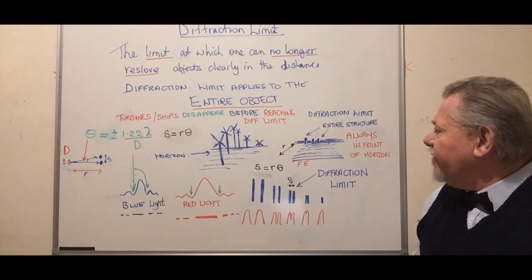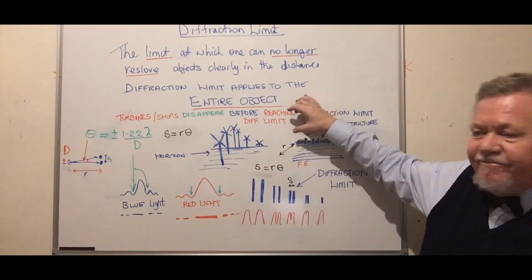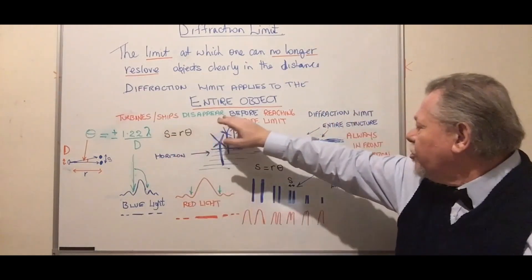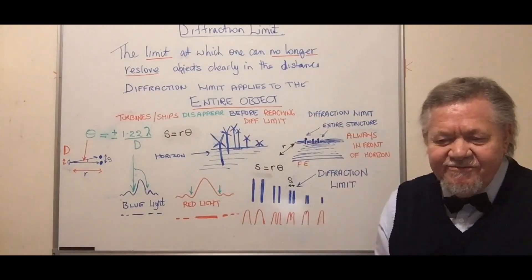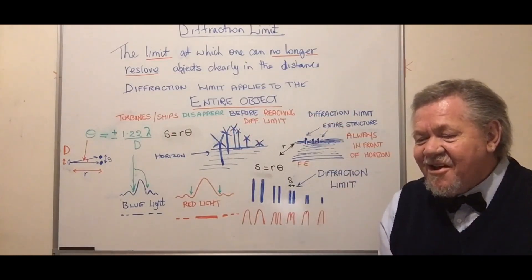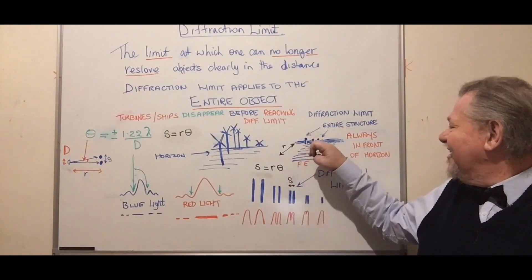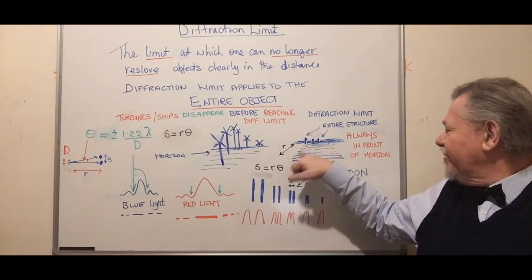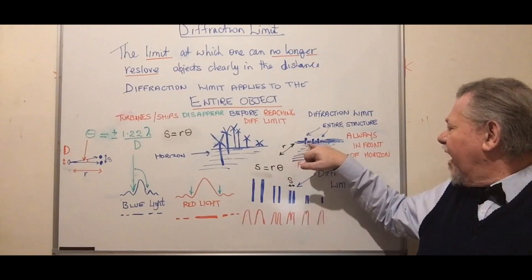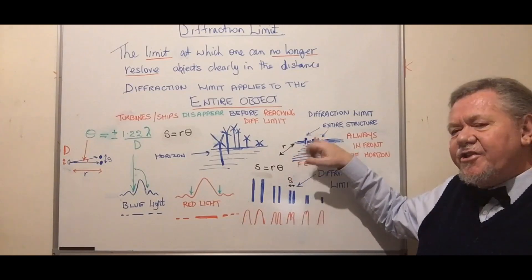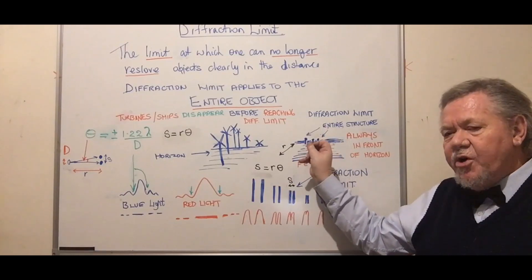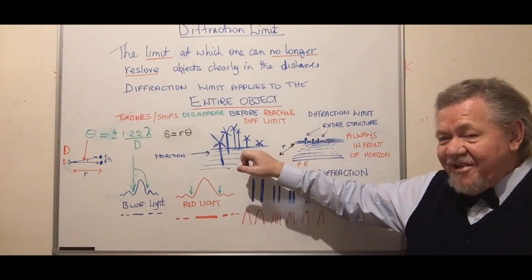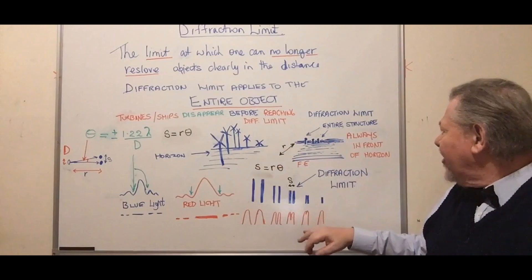Let's look at the key thing here: the turbines and ships disappear long before they reach the diffraction limit. That is the key point. When objects are a long way away, they get smaller in the distance and come closer together until they merge so they look like one object. That doesn't happen here with the wind turbines.